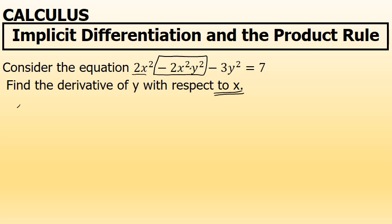The first term, 2x squared, has a derivative of 4x. For the second term, I'm going to use the product rule. I'll think of the first factor as negative 2x squared and the second factor as y squared. The product rule says: take the first factor unchanged, negative 2x squared, times the derivative of the second term. Since y squared has a derivative of 2y, but I'm differentiating with respect to x, I must include a factor of dy/dx, which I'll represent as y prime.